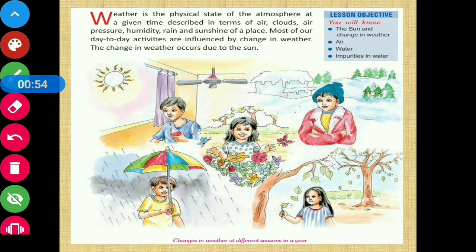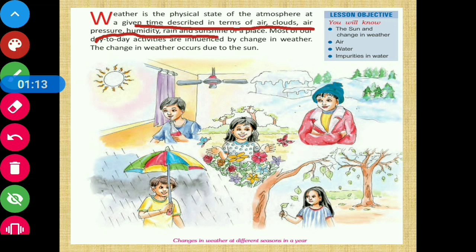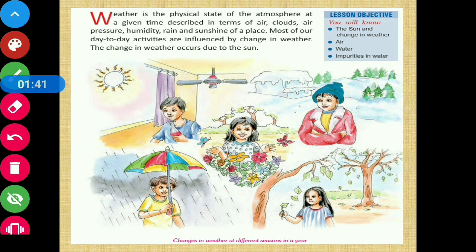Let's first see a brief introduction about this chapter. Weather is a physical state of the atmosphere at a given time, described in terms of air, clouds, air pressure, humidity, rain and sunshine of a place. तो weather actually एक physical state होता है atmosphere का जो कि उस particular जगह के air pressure, clouds, humidity उन सब को base करके हमें जो information मिलती है — that is called weather.